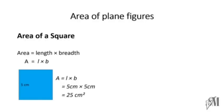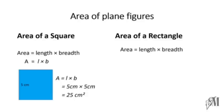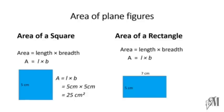When you come to an area of a rectangle, it is quite similar to the area of a square — that also is equal to its product of length and breadth. So area of a rectangle, if you take this example where the length is 7 centimeters and breadth is 5 centimeters, its area will be 5 into 7, that is 35 square centimeters.